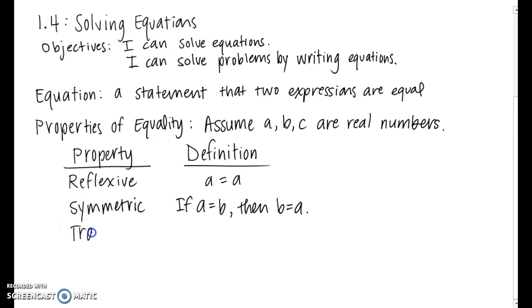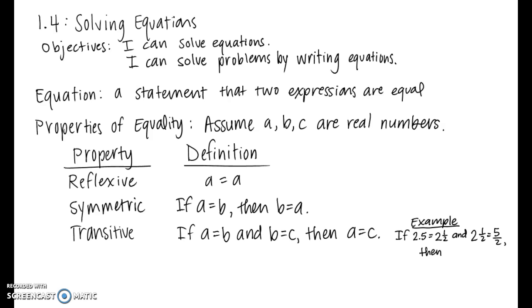Transitive property states that if a equals b and b equals c, then a equals c. An example of the transitive property would be what I have written in the bottom right corner. If 2.5 equals 2.5 and 2.5 equals 5/2, then that means 2.5 equals 5/2, which we agree. It's just another form, decimal and improper fraction.